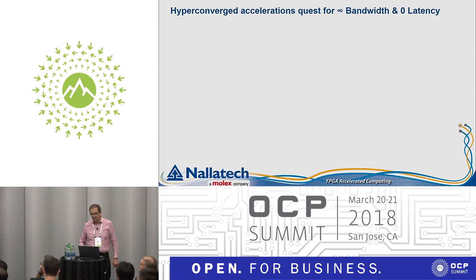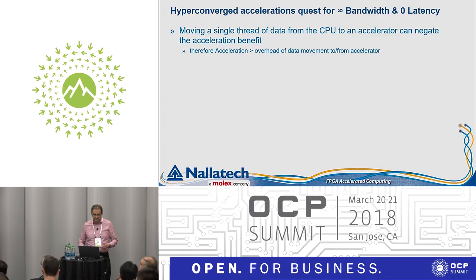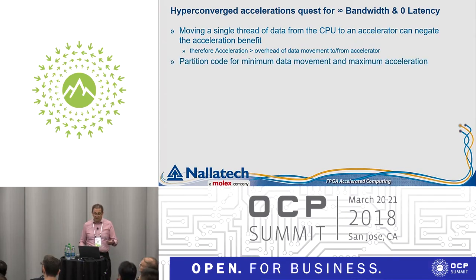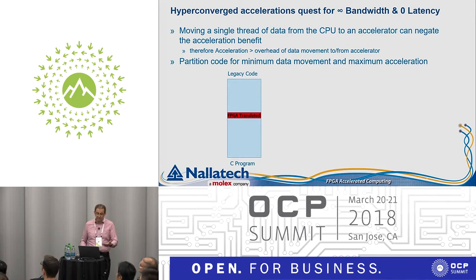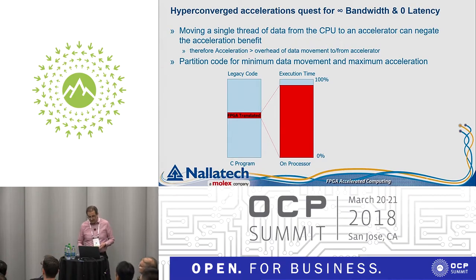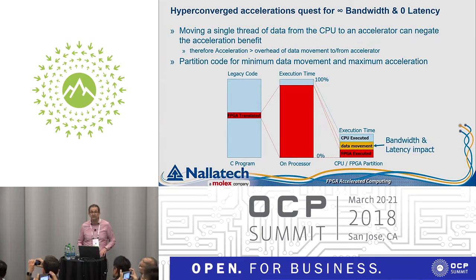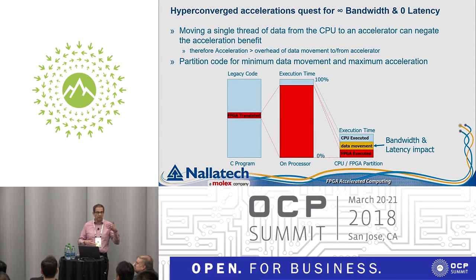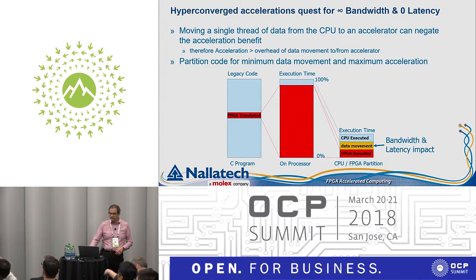Looking at hyper-converged acceleration — the quest for infinite memory and zero bandwidth — moving a single thread of data from the CPU to an accelerator does negate the acceleration benefit. Your acceleration has to be bigger than the overhead of the data movement. One technique is to partition the code for minimum data movement and maximum acceleration. The low-hanging fruit are big hotspots, but you often have many small functions that could run well on the accelerator, and that's where data movement becomes more critical.